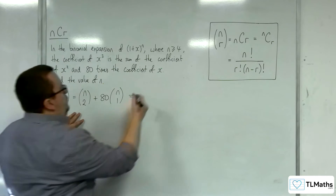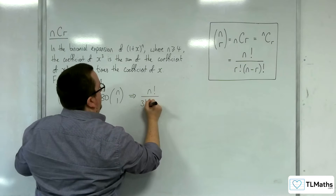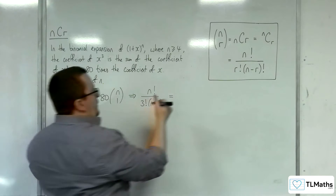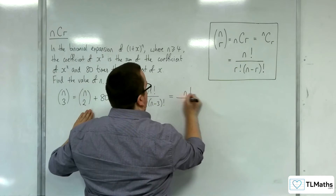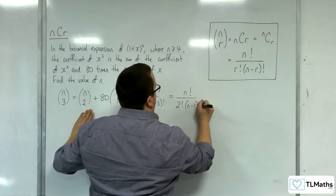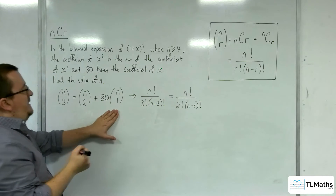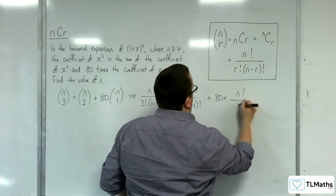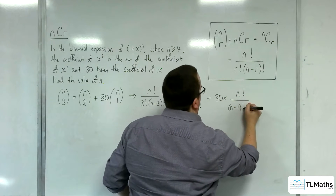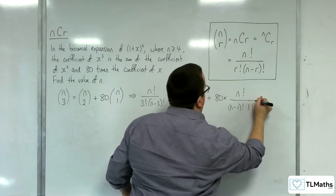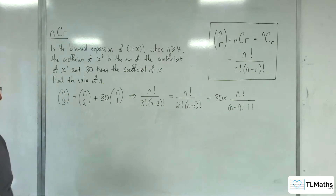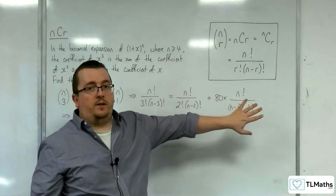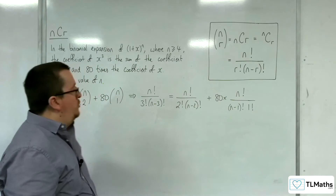So nC3 is n factorial over 3 factorial times (n-3) factorial, and that equals nC2, which is n factorial over 2 factorial times (n-2) factorial, plus 80 times nC1, so plus 80 times n factorial over (n-1) factorial times 1 factorial. Now, n factorial is a factor throughout, so I can divide through by n factorial.